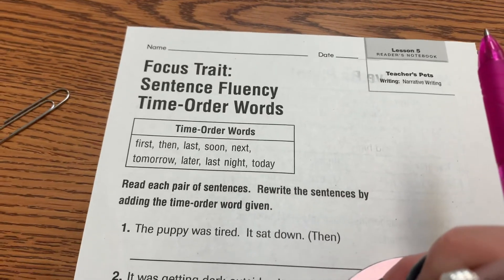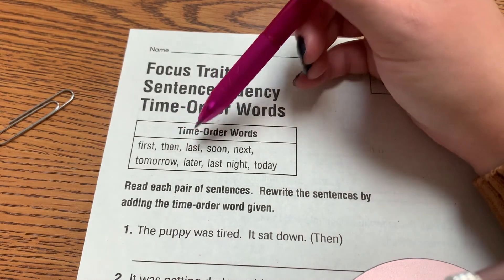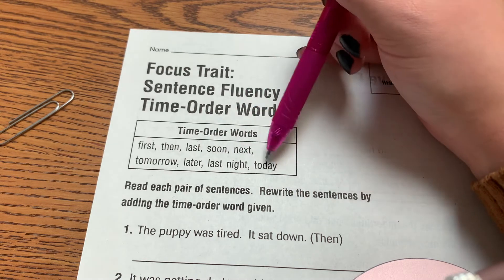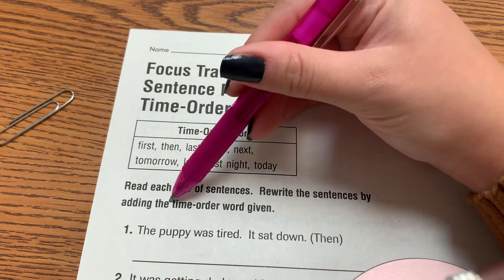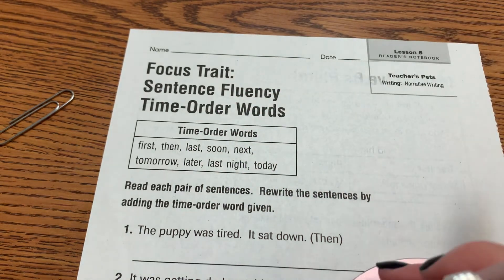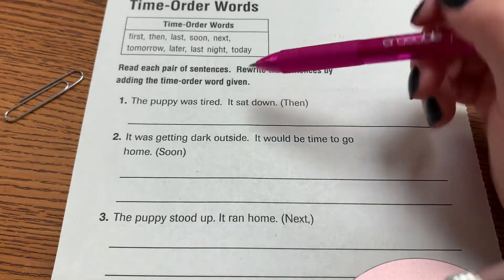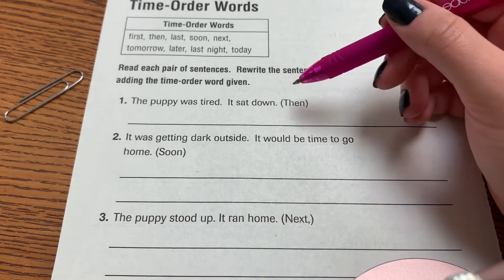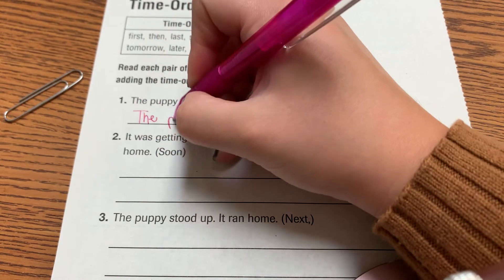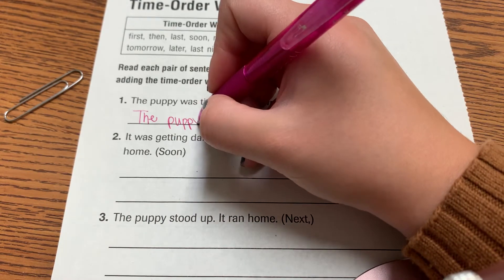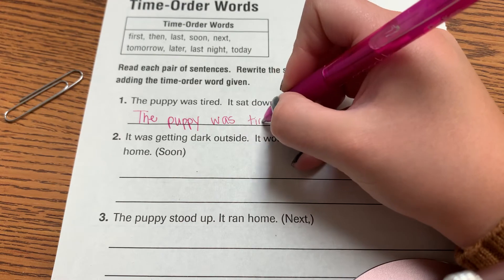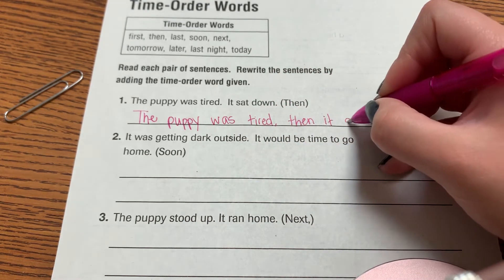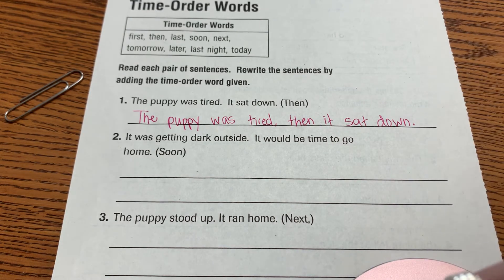Page 66 — we're dealing with our focus traits: sentence fluency and time order words. Time order words are: first, then, last, soon, next, tomorrow, later, last night, and today. Read each pair of sentences and rewrite them by adding the time order word given in parentheses. The puppy was tired — you're going to take two sentences and turn them into one sentence adding 'then.' Whenever we do this, we add a comma. So: 'The puppy was tired, then it sat down.' You can pause this video if you need time to write the sentence.